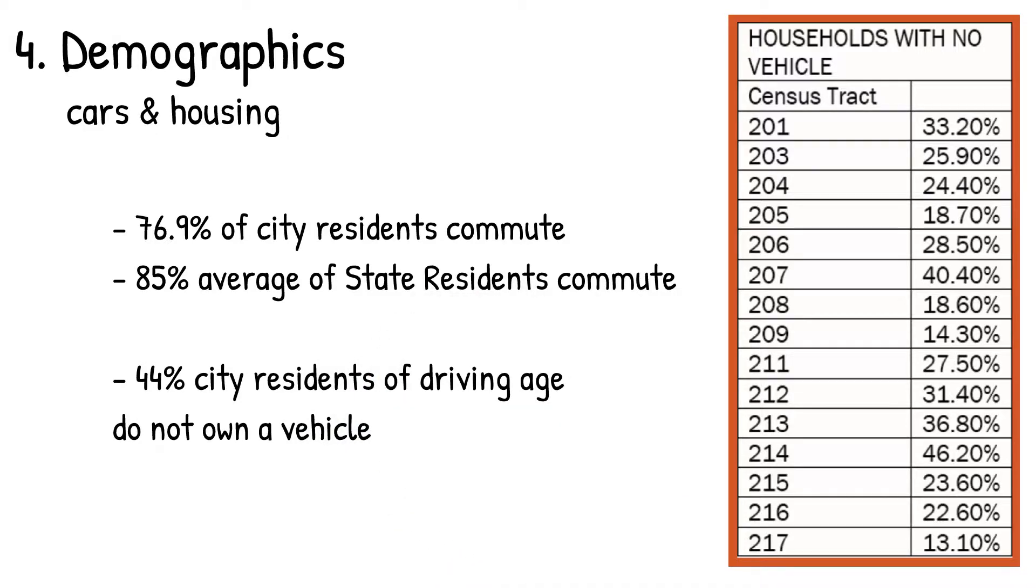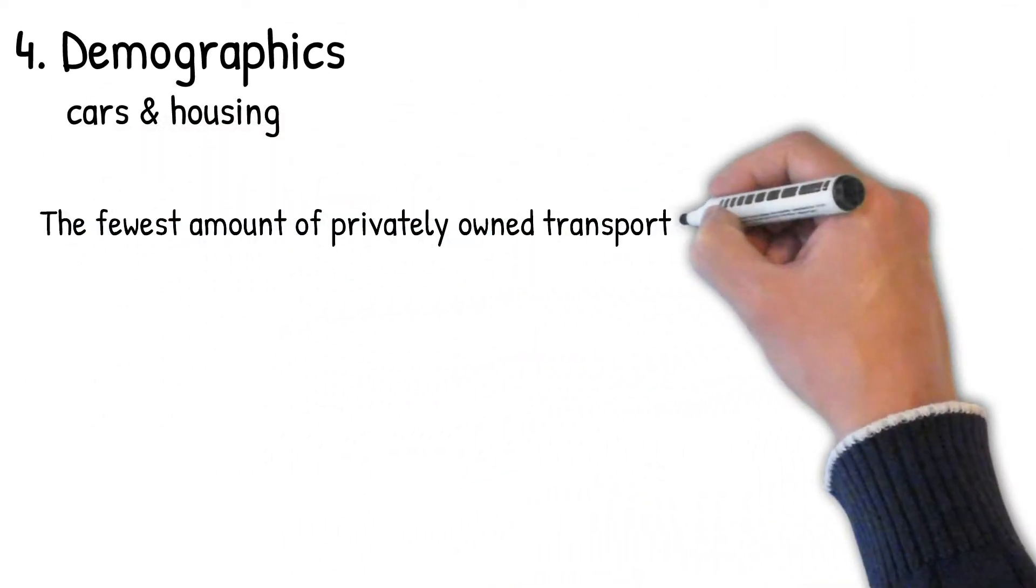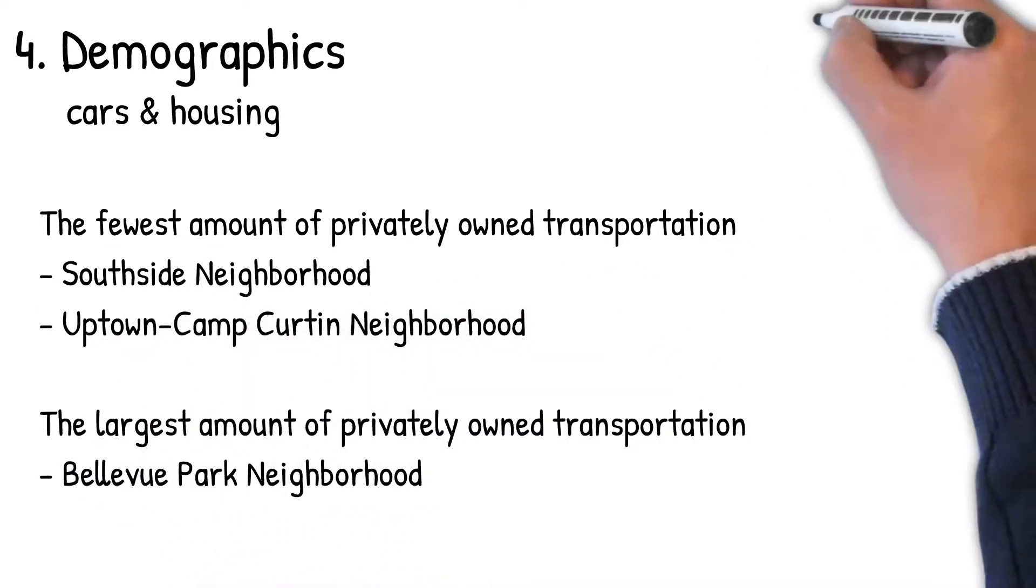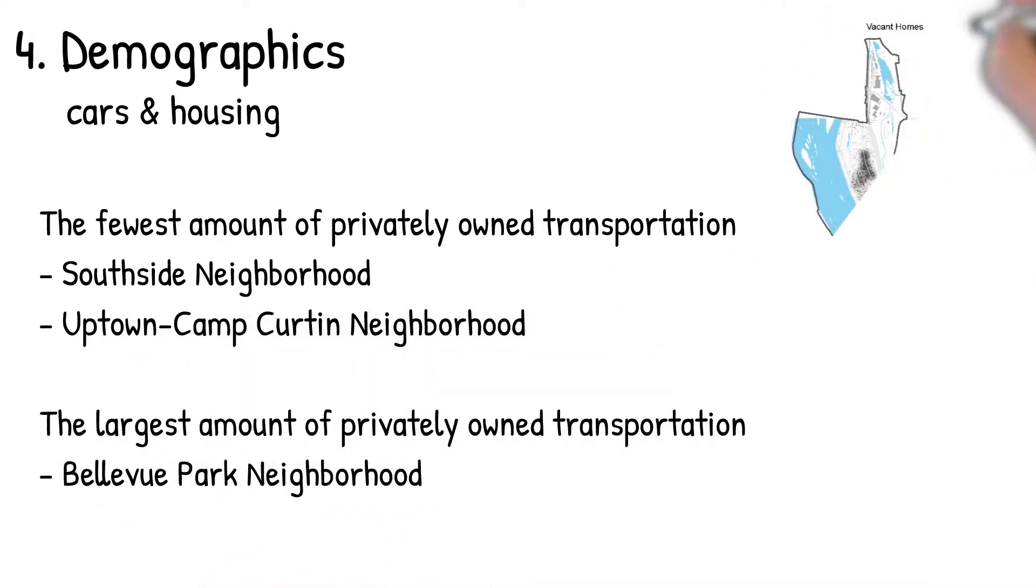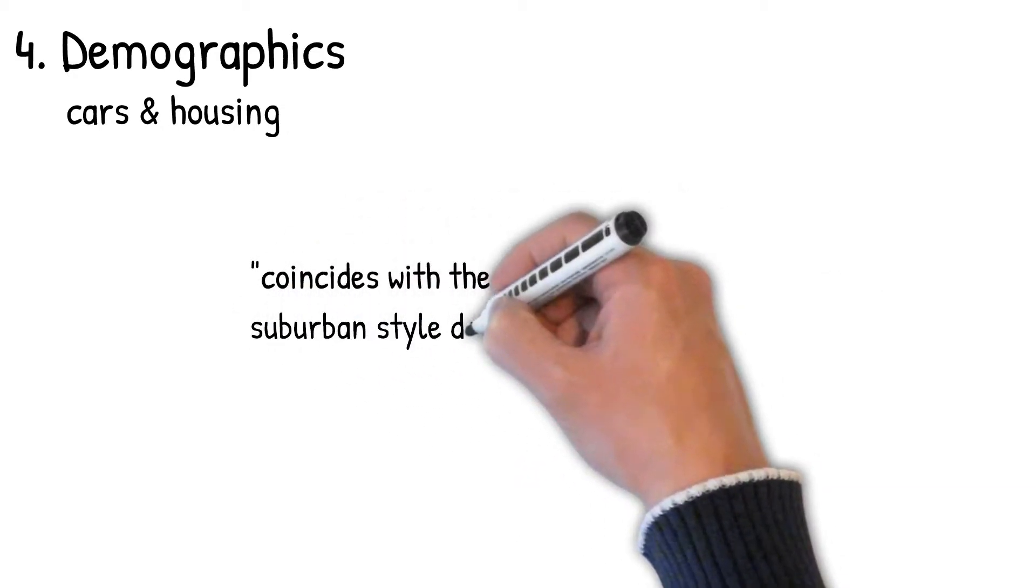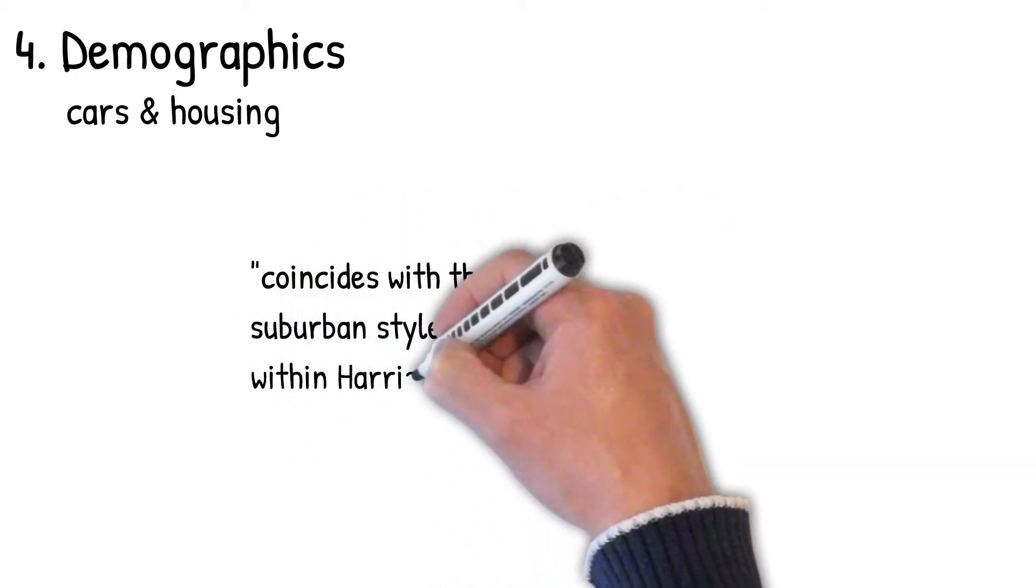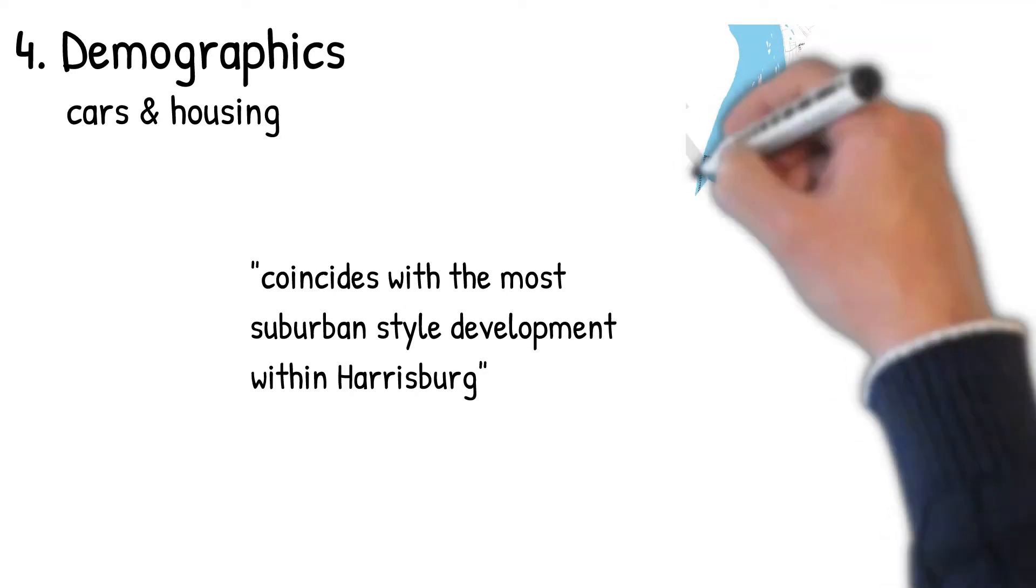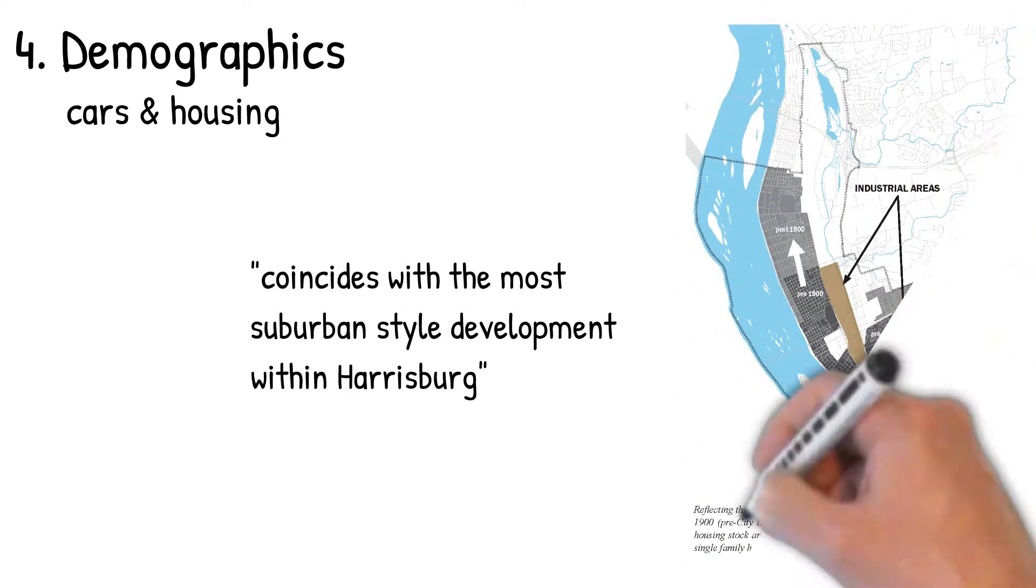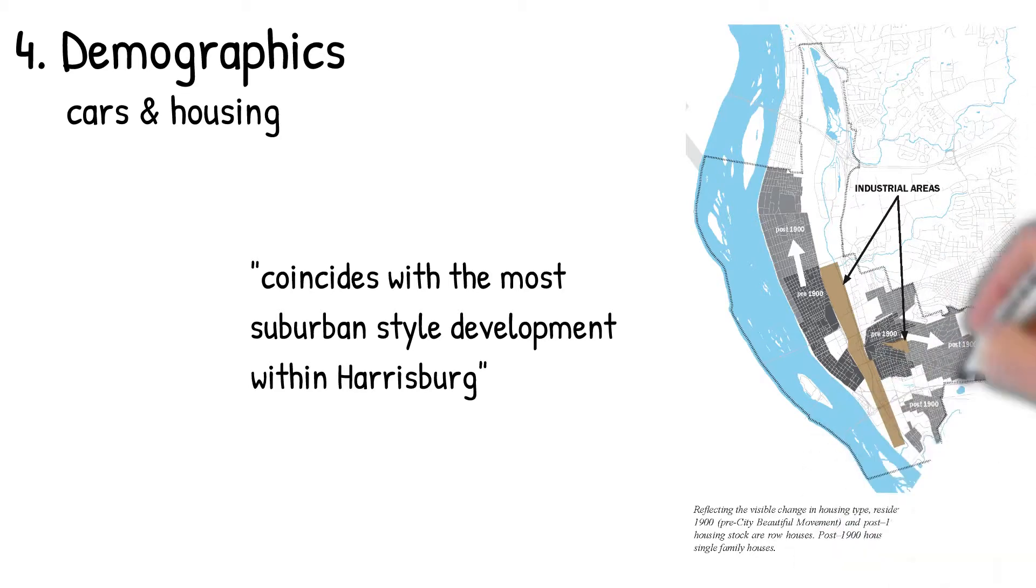Why is this something to consider? The fewest amount of privately owned transportation is in the Southside neighborhood and Uptown Camp Curtin neighborhood, and the largest amount is in Bellevue Park. This coincides with the most suburban style development within Harrisburg being Bellevue Park. So why is that all significant? It's to see how we can reconfigure our city so that it benefits more residents who may not have an ability to own a car as well as own affordable housing. We've got to plan for these two things. This is where cars and housing comes together.